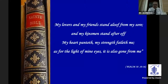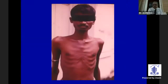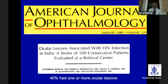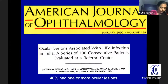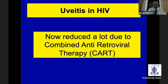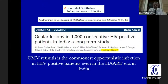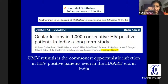I start with a quotation: 'My lovers and my friends stand aloof from my soul, my heart panteth, my strength faileth me, as for the light of my eyes, it is also gone from me.' Sadly, this is the plight of an HIV patient — not only are various organs involved, the eye is also involved. In a study of 100 consecutive patients, 40% had one or more ocular lesions and 17% had CMV retinitis. However, uveitis in HIV has reduced a lot due to combined antiretroviral therapy (cART). We studied ocular lesions in 1,000 consecutive patients in India with Dr. Sudarshan and found CMV retinitis is still the most common opportunistic infection in HIV-positive patients, even in the HAART era.